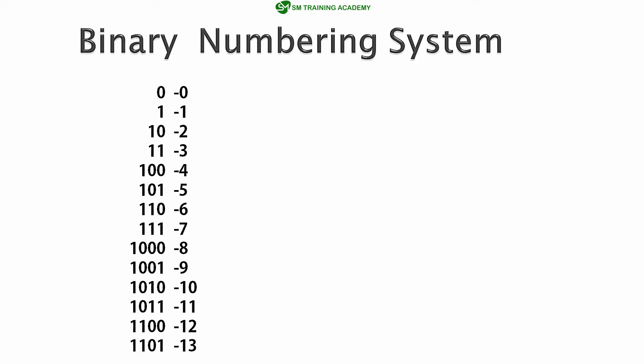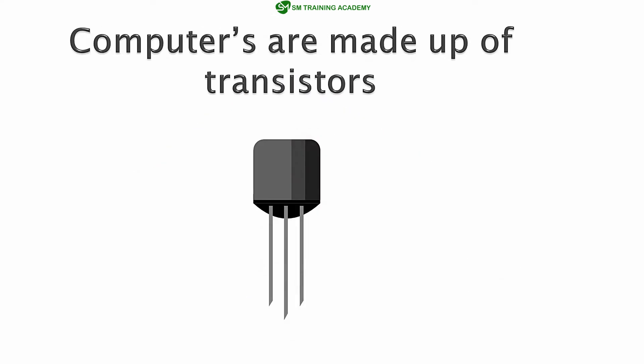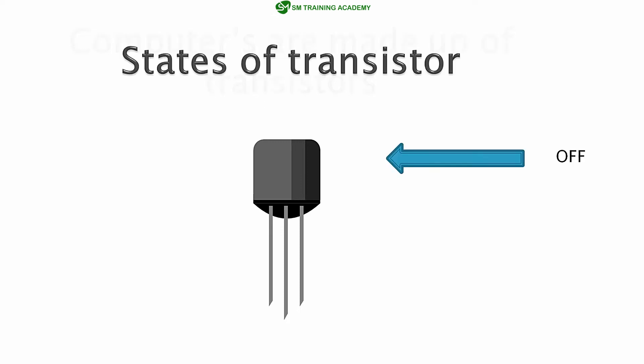Since the binary numbering system has only two possibilities, it is also called the base-2 numbering system. We very well know that computers are made up of transistors — not just a few, but millions, billions, or even trillions of transistors. These transistors have only two states: off and on.